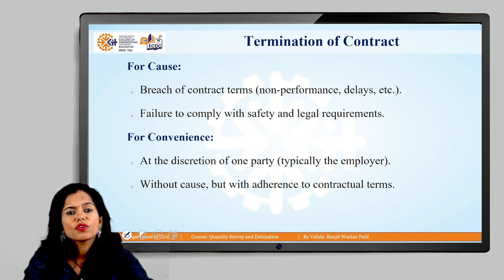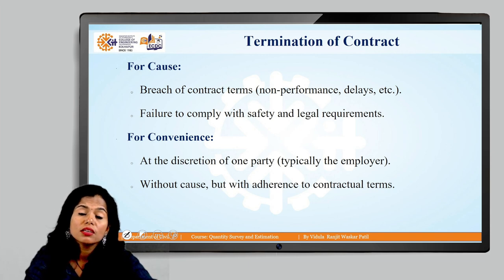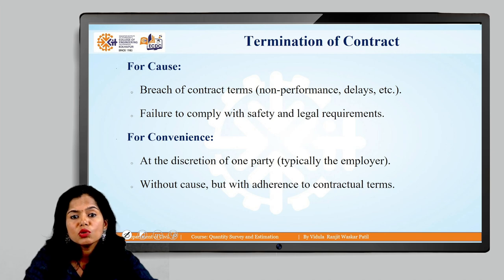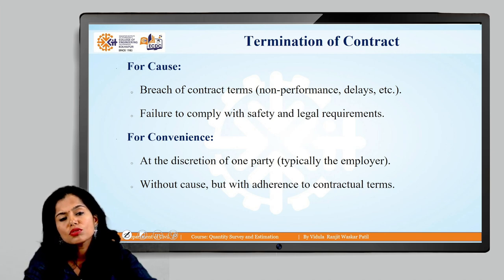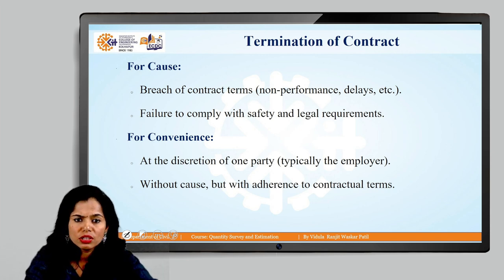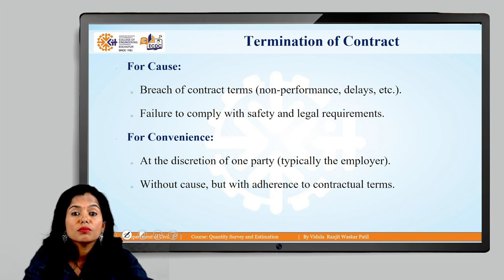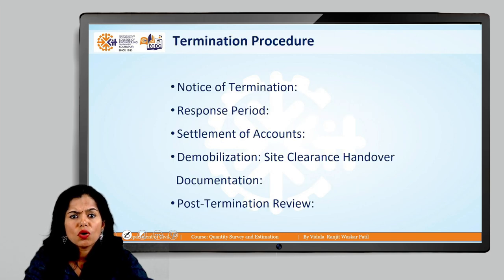The last topic is termination of contract — how the contract comes to an end. Contracts come to an end by cause. The first cause can be breach of contract, wherein the contractor fails to perform or delays in the contract. Failure to comply with safety and legal requirements can also end the contract. The contract can also come to an end by convenience, if both parties mutually decide to stop the work and terminate the contract without cause, in accordance with the terms of the contract. After completion of the project, the termination of contract also happens.